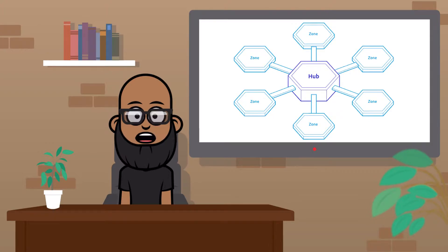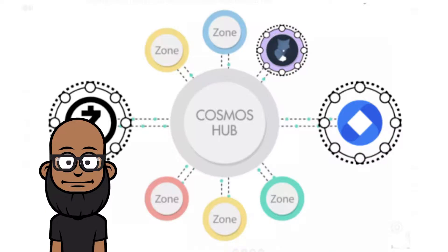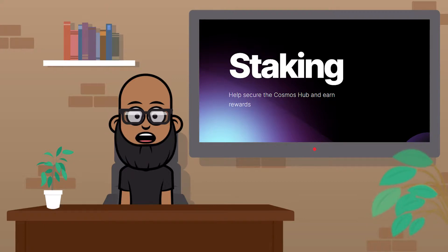What makes this so powerful is that a Zone chain only needs to connect to one or more Hubs to be able to connect to many other Zones. The most notable and first Hub in the Cosmos network is the Proof-of-Stake Cosmos Hub, which uses the Atom token to transact and which can be staked to participate in on-chain governance as well as receive airdrops. Staking is when you lock your Atom tokens with a validator in order to earn a portion of the transaction fees they get.